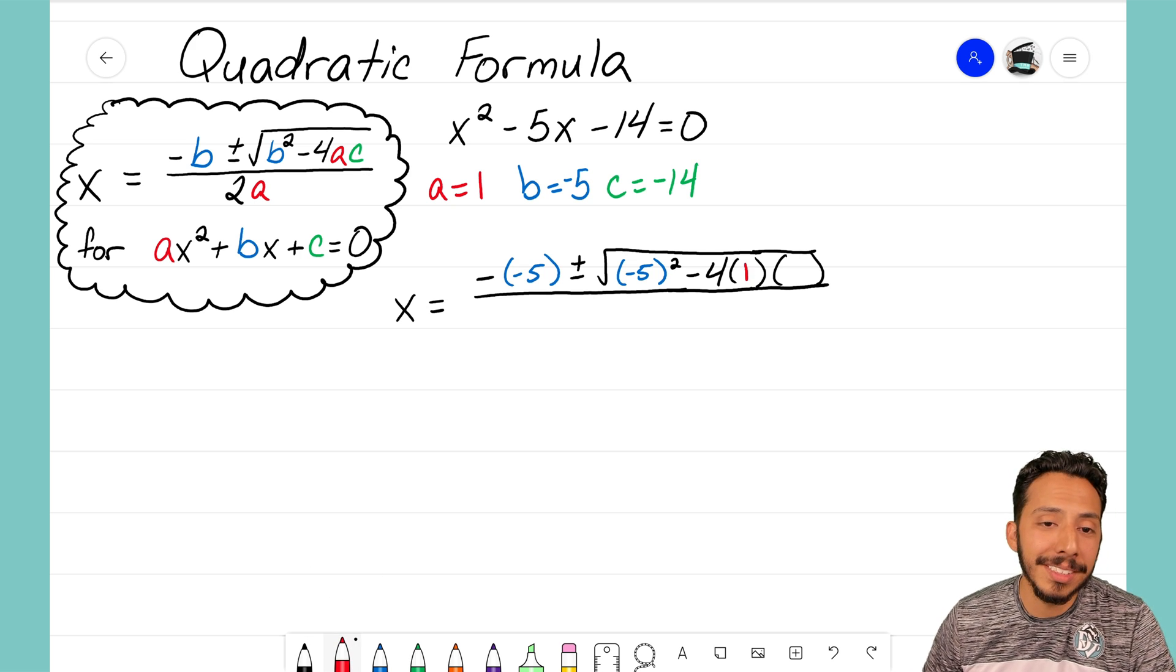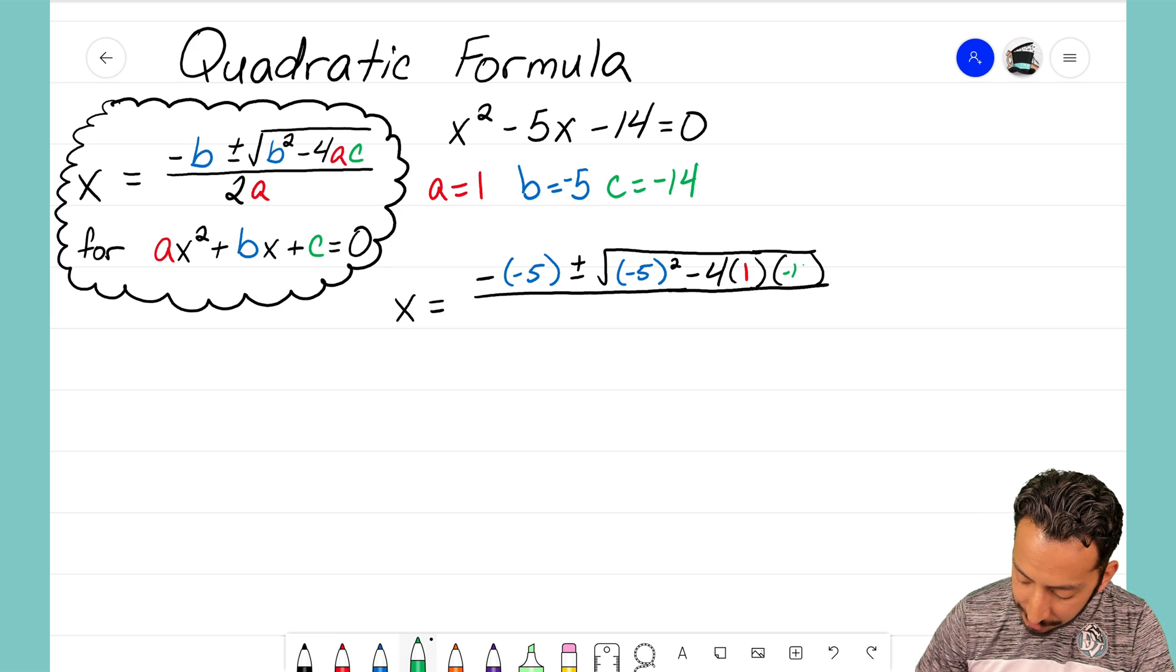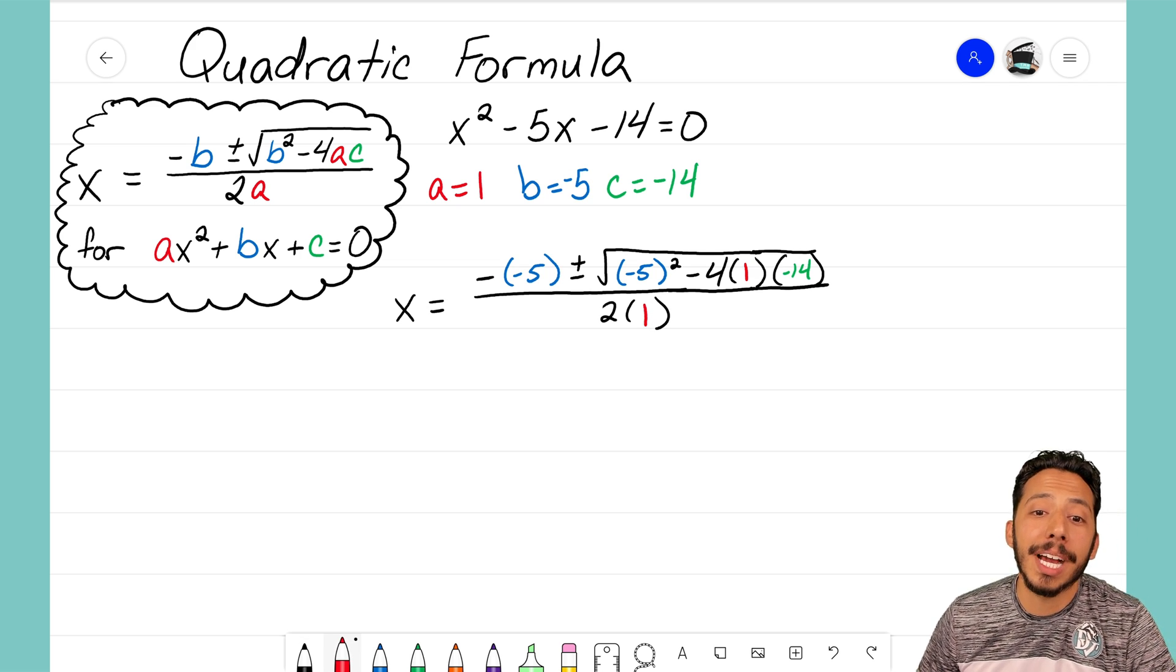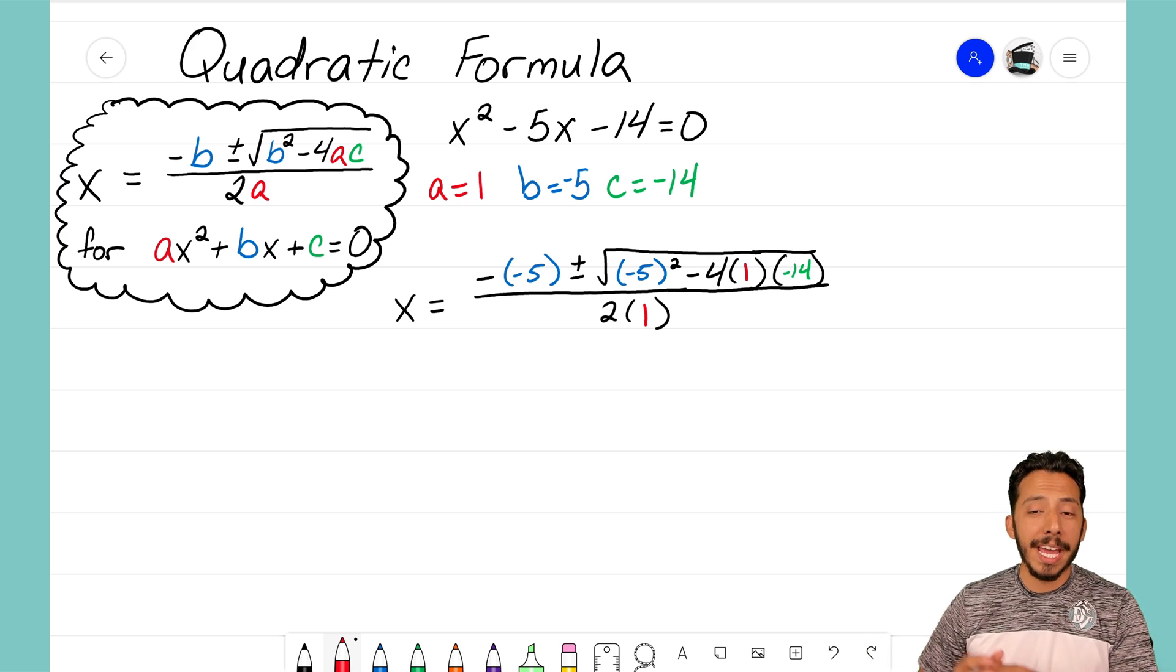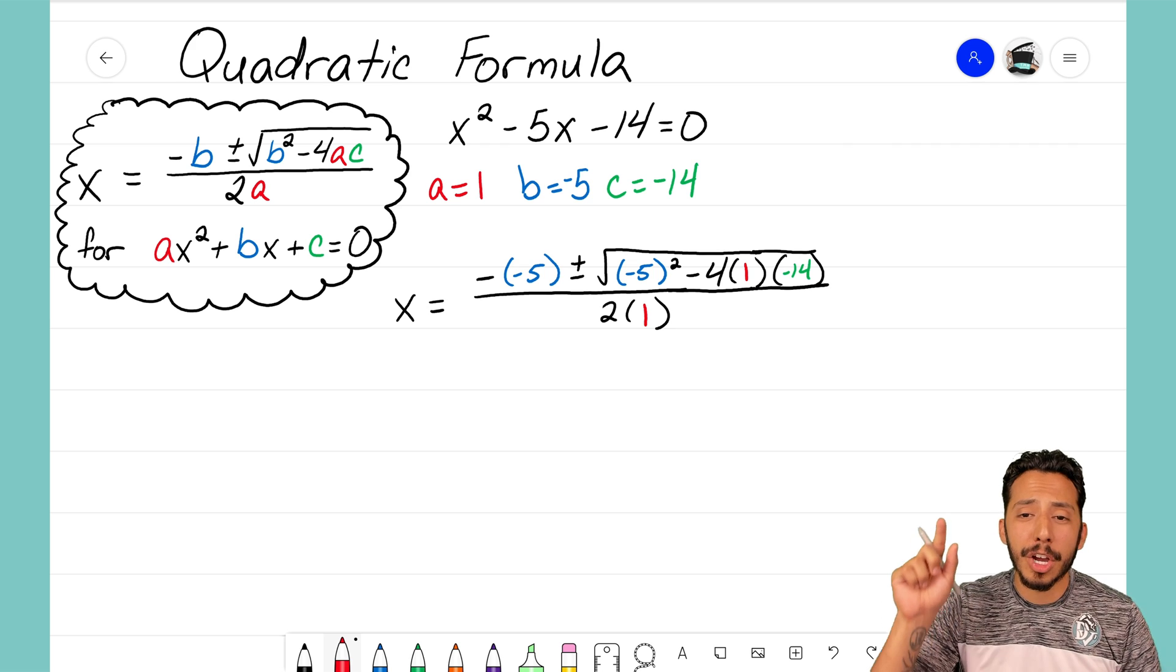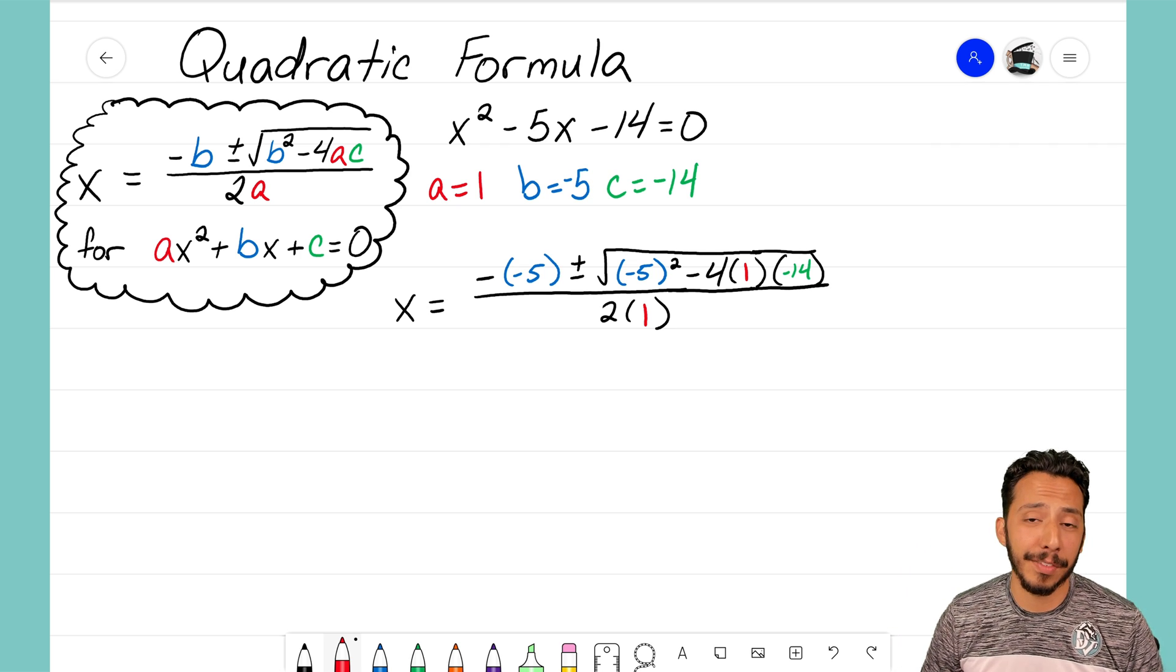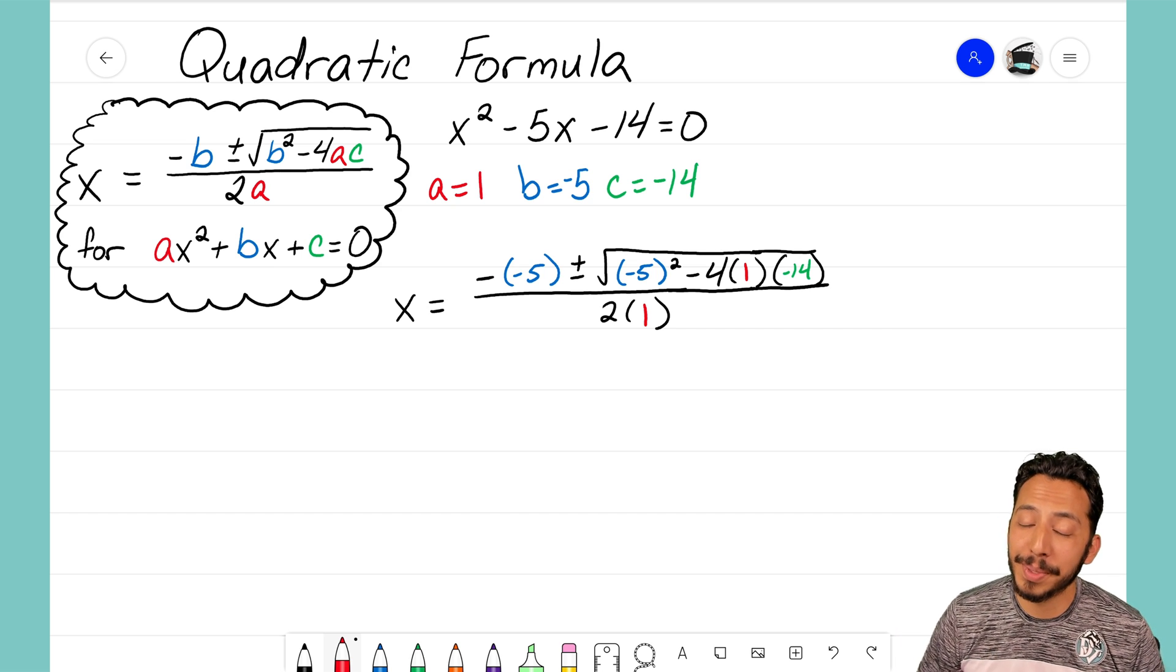I have 4 times a. Well, my a term here is 1, and then times the c term. Well, the c term here for us is negative 14. And that's all over the quantity 2a, in this case 2 times 1. So that's the first step for the quadratic formula: making sure that you enter in all of your terms, your a, your b, and your c, correctly into the formula, and making sure that you're not dropping any negative signs along the way. Because if we accidentally forgot one negative sign, all of the work that's coming afterwards would be incorrect.